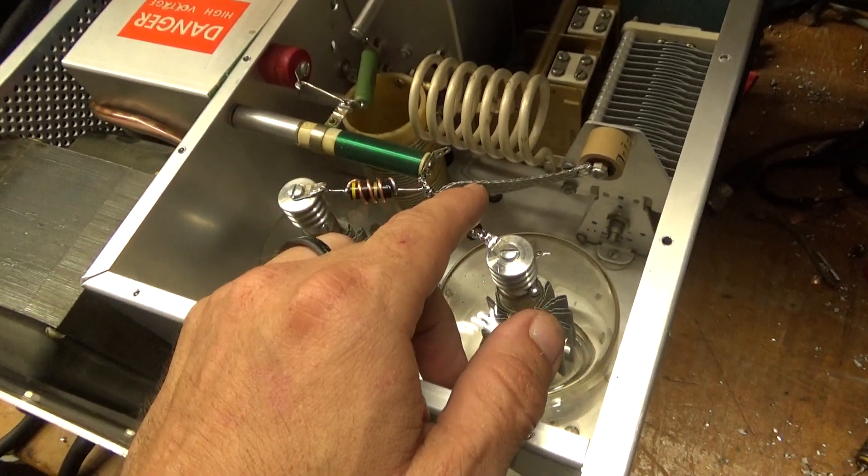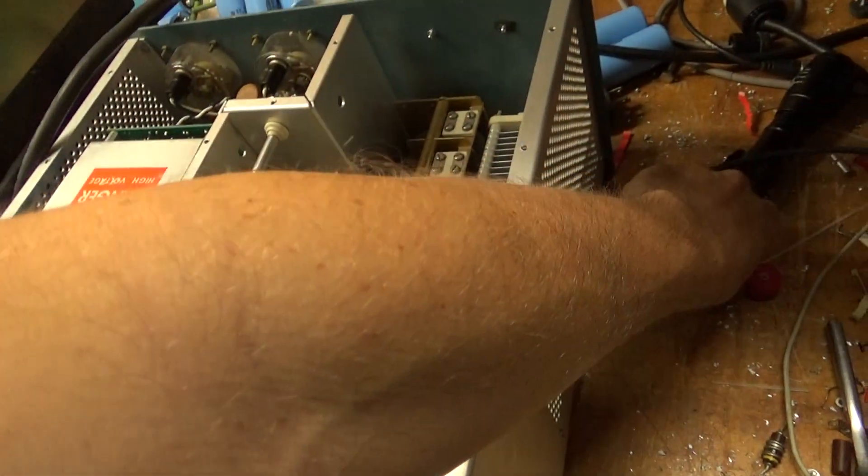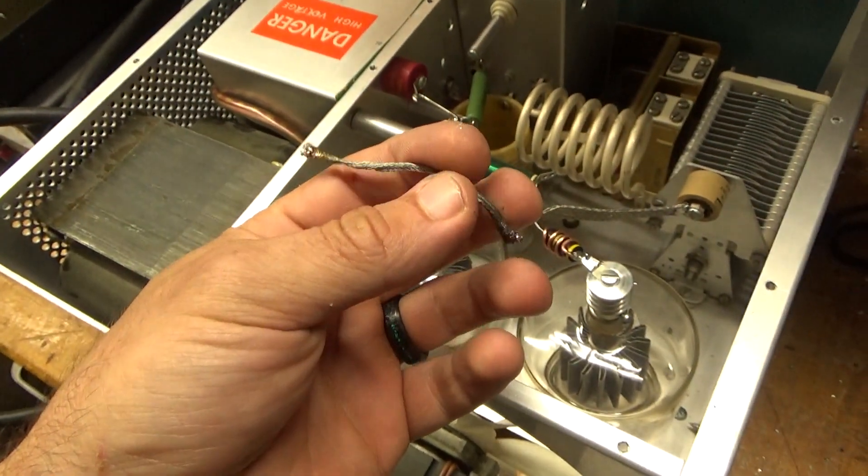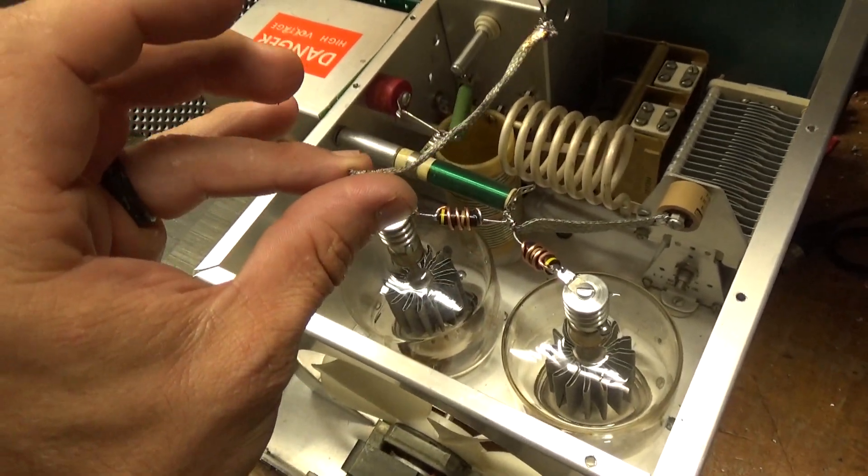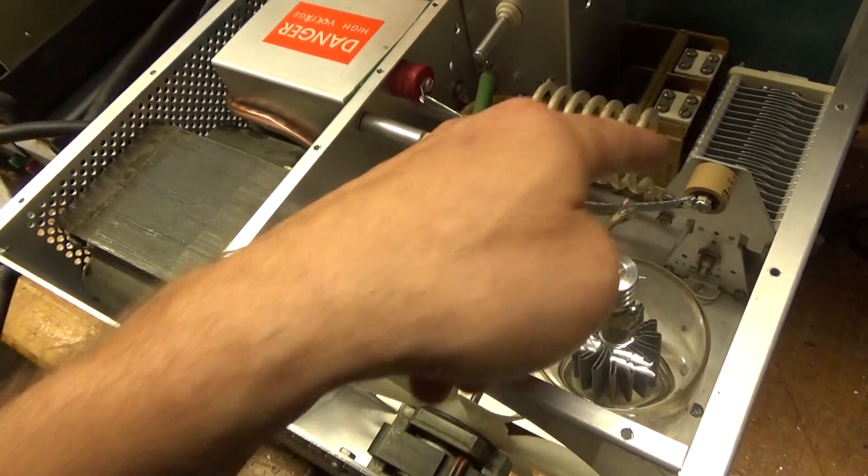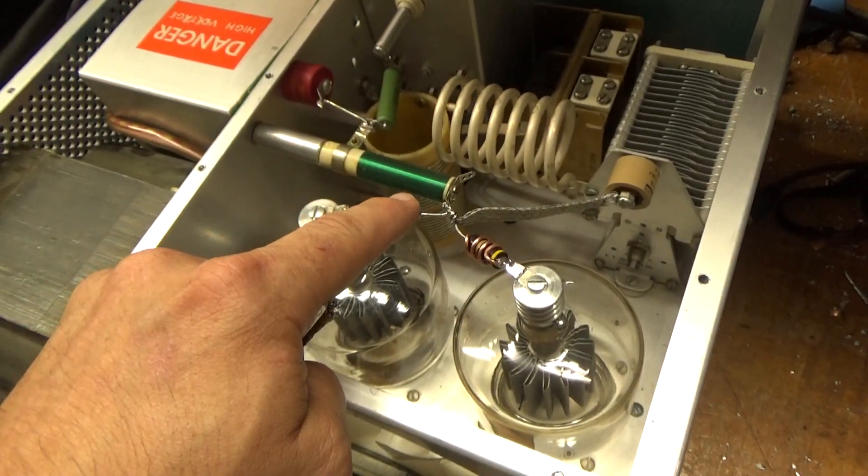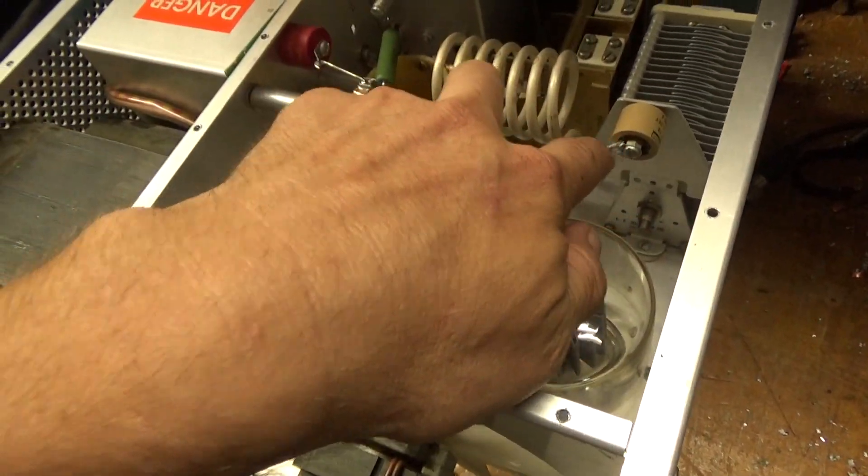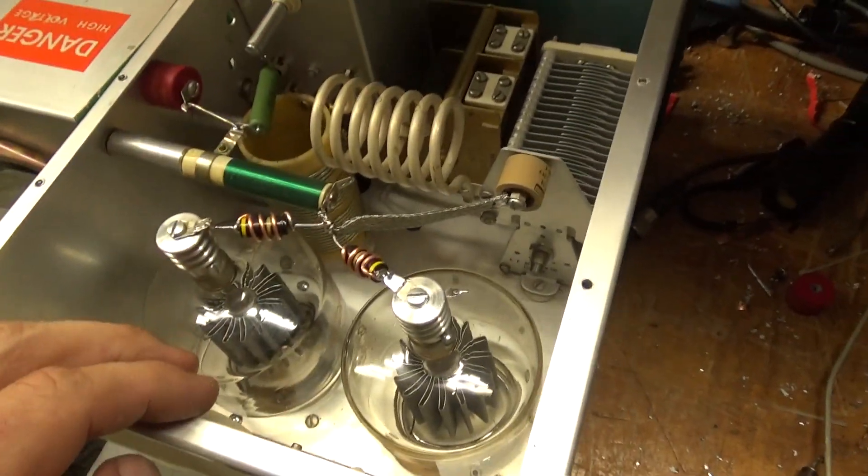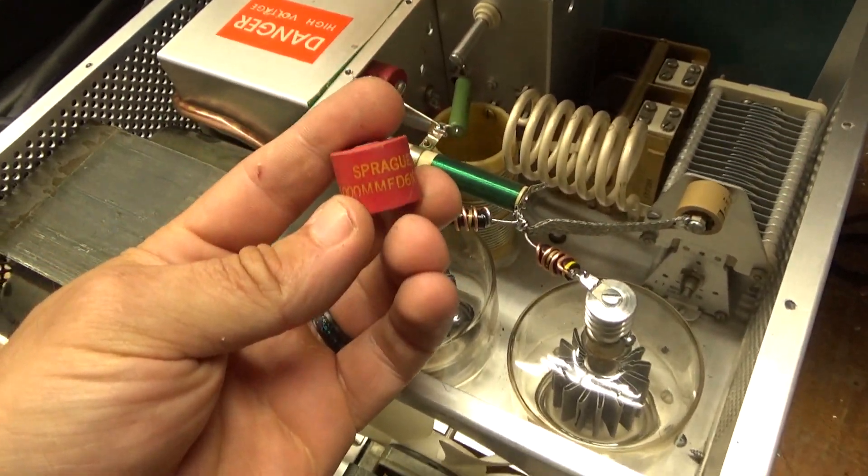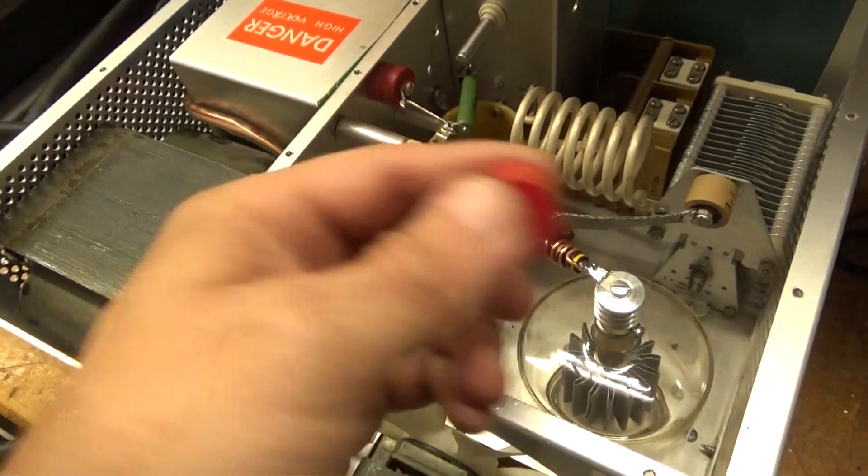I replaced the old braided wire, ground strap-type wire, between the plate-blocking cap and the plate-choke with new stuff. Resoldered it. Nice and secure. I got rid of that old... these are prone to failure, these old spray caps when being used as a plate-blocker.